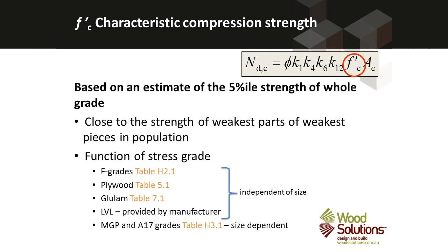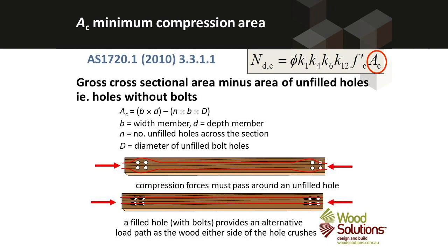The compressive strength of the material can be found in the standard reference locations for timber elements: for sawn timber, we look in Appendix H; for glulam, in Chapter 7; and for LVL, in the manufacturer's data. That will give us the compression capacity.